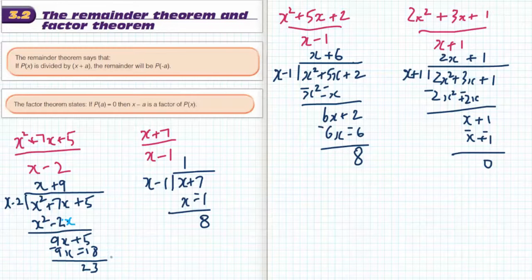Okay, so I've gone ahead and I've done these divisions. In the first case I got a remainder of 23, in the second I got a remainder of 8, in the third I got a remainder of 8, and in the fourth I got a remainder of 0.